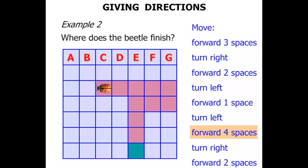Then the beetle turns to the right. Watch carefully. Finally, forward two spaces. One, two. So the beetle finishes at the point C. Excellent.